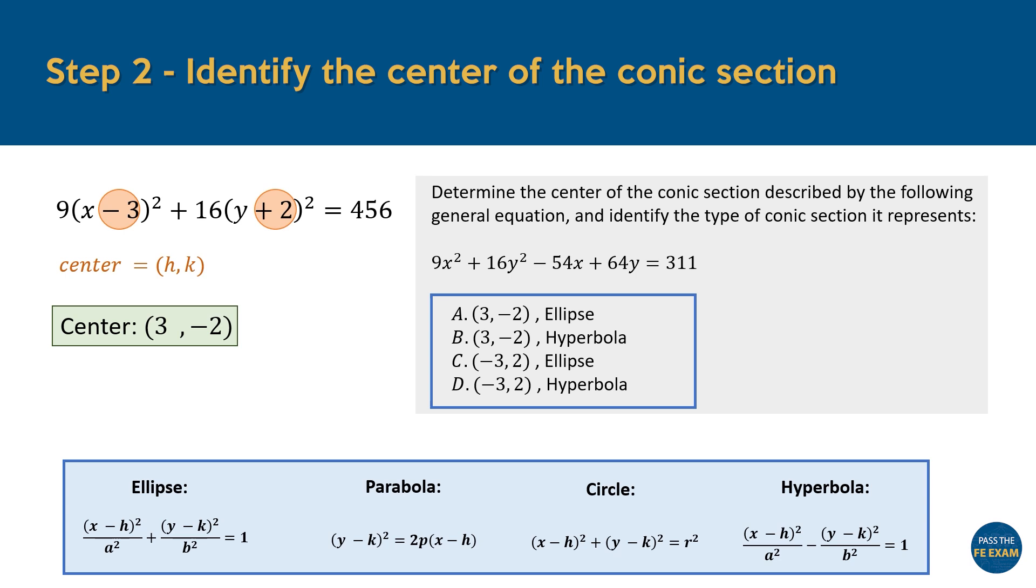Second, the question indirectly tests our ability to distinguish between an ellipse and a hyperbola. The key difference lies in the sign between the two squared terms in the standard form, positive for an ellipse and negative for a hyperbola. When working quickly, it's easy to confuse the two. So always double check the equation to ensure that you accurately identify the curve, especially when using this method of visual inspection.